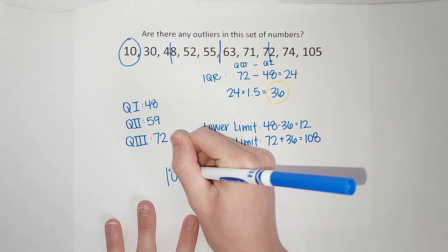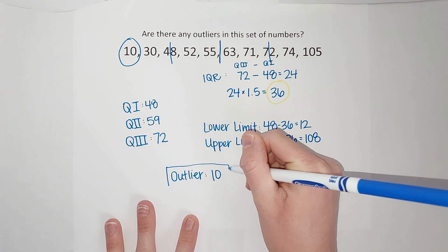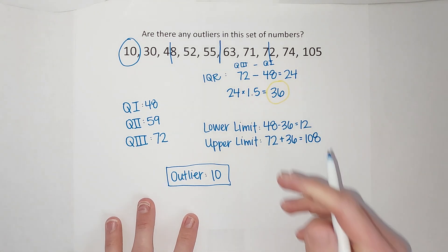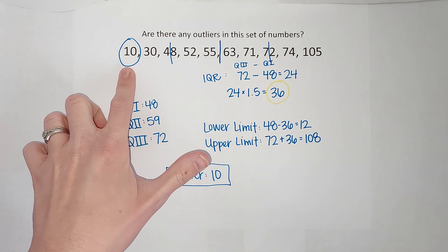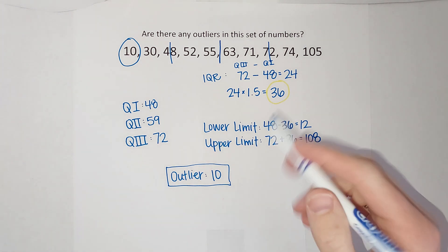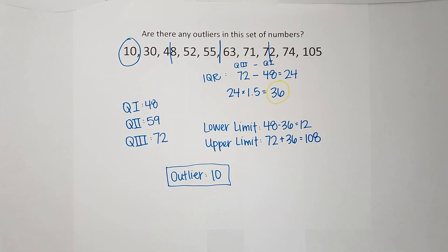If you are making a modified box plot, you label the outlier with a little asterisk. I've got a bunch of videos where I make some of those that I will link. Hopefully that made sense. Bye.